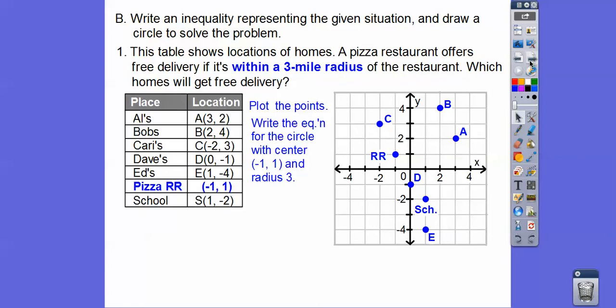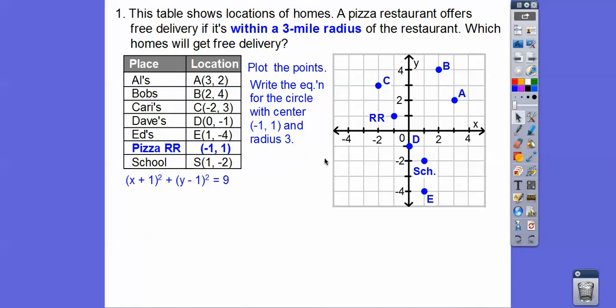It says within a three-mile radius of the pizza restaurant. So, the pizza restaurant is at (-1, 1). Here's the restaurant right here. And then we're going to draw a radius, a circle with radius 3. It says write an inequality that represents this. There's the equation, the equality, the equation that equals our pizza restaurant. So, the radius squared, 3 squared is 9. It's (x - (-1))^2 becomes (x + 1)^2. And then (y - 1)^2 equals the radius squared, which is 3 squared.